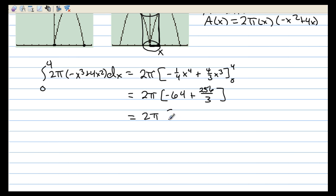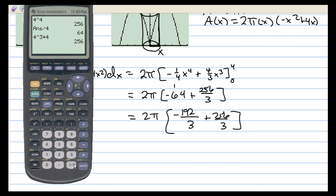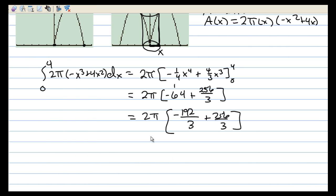So we have 2 pi times negative 64 times 3, 192 over 3 plus 256 over 3, let's use our calculator for that, negative 192 plus 256 is 64 over 3. So the answer is 128 pi over 3, when you take the 64 times the 2.